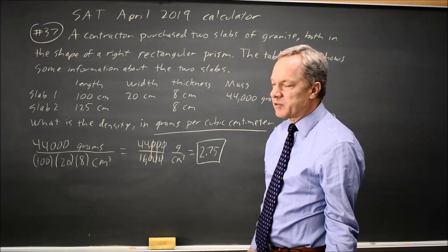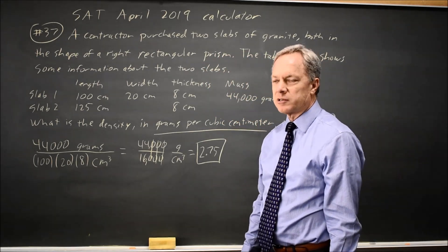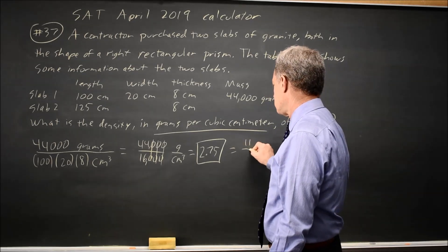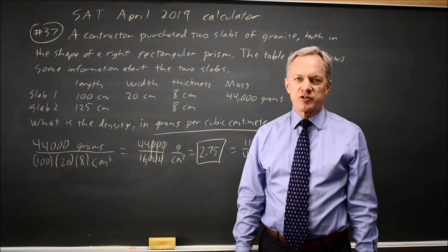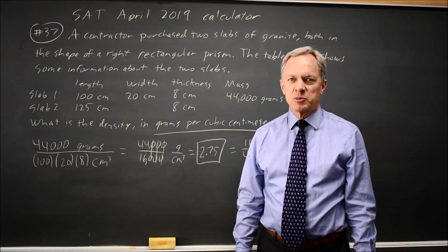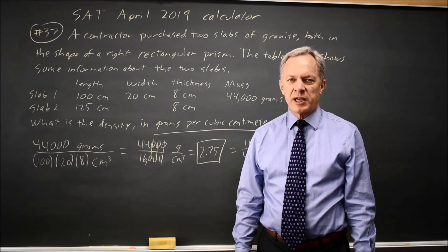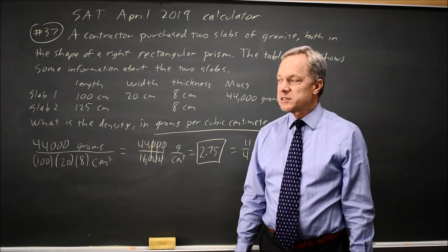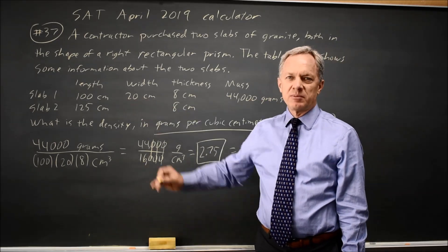You can also do it as a fraction. If you're simplifying, you get 11 over 4. College Board will often ask you to find density, and it helps to remember that density, mass per unit volume, is the mass divided by the volume.